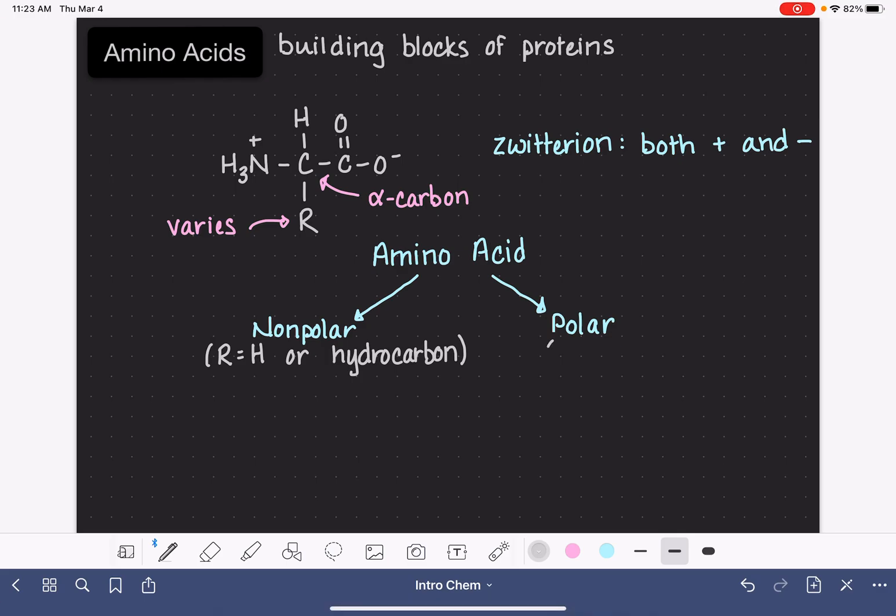For a polar amino acid, the R group contains an oxygen, a sulfur, or a nitrogen atom. It's going to also have carbons and hydrogens in it as well, but in addition to the carbons and hydrogens, it's going to have one of these three different types.